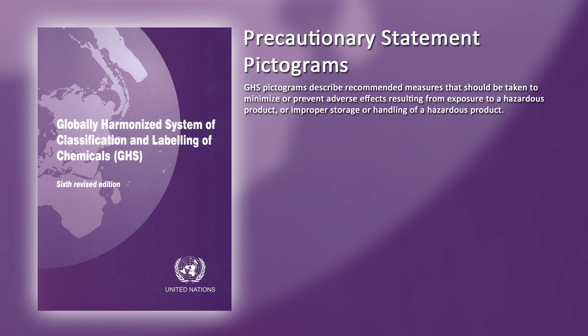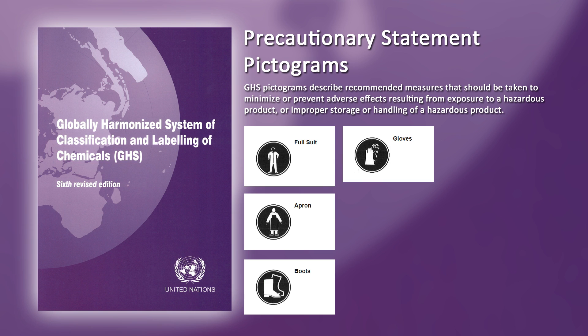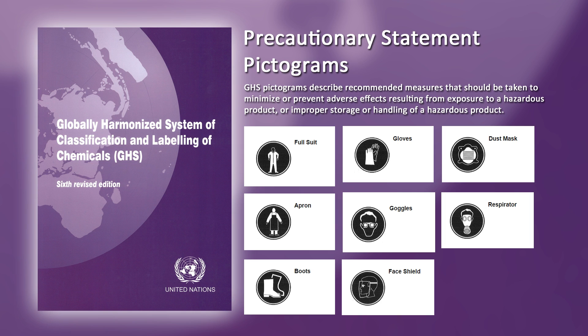Common pictograms found in the GHS include: full suit, apron, boots, gloves, goggles, face shield, dust mask, and full face piece dust and vapor respirator.